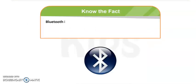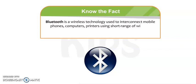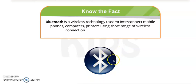Note the fact about Bluetooth. Bluetooth is a wireless technology used to interconnect mobile phones, computers, and printers using a short range wireless connection. We can share our information via mobile, through computers and printers — we can exchange information with Bluetooth. It's a wireless connection.